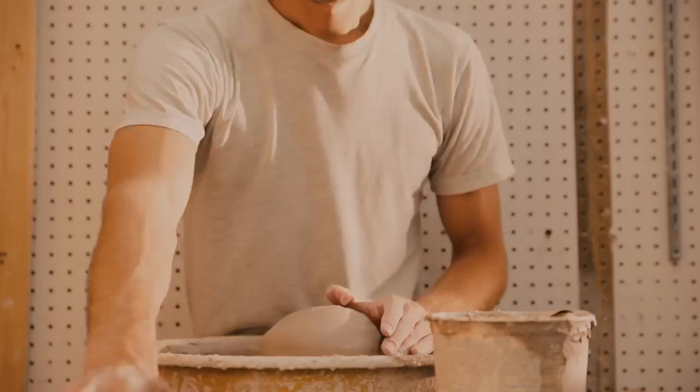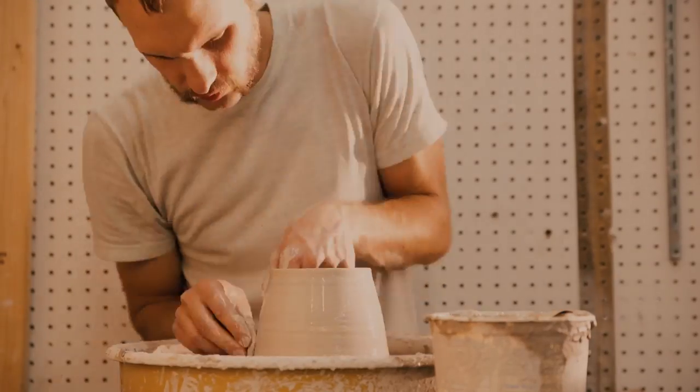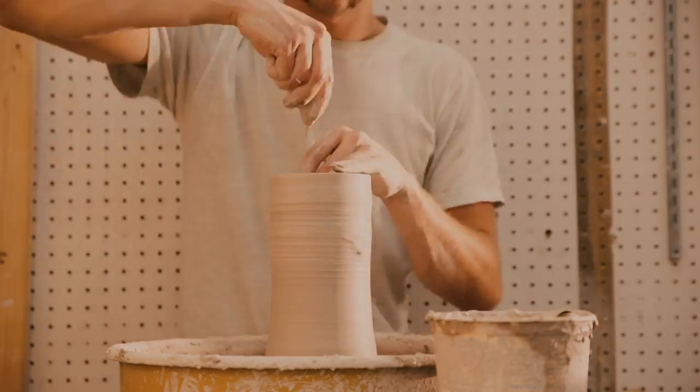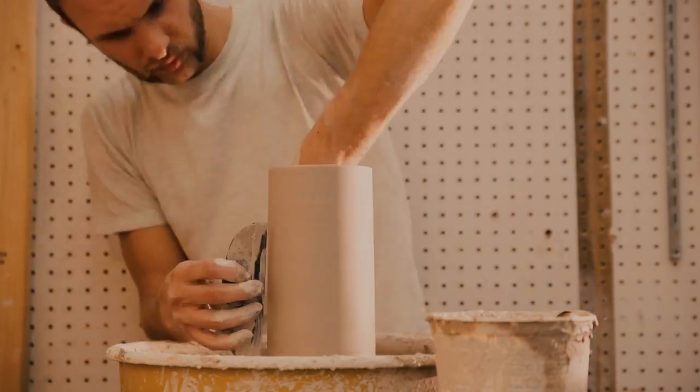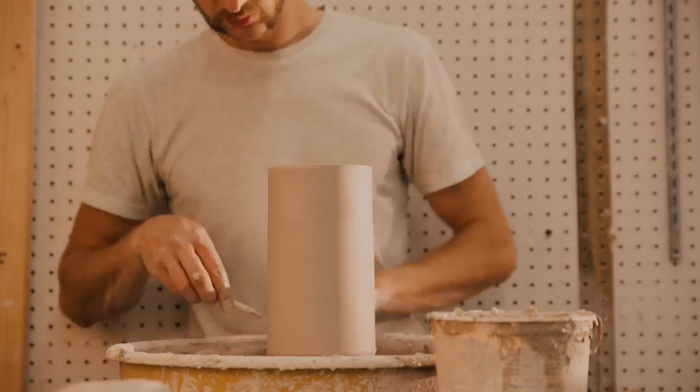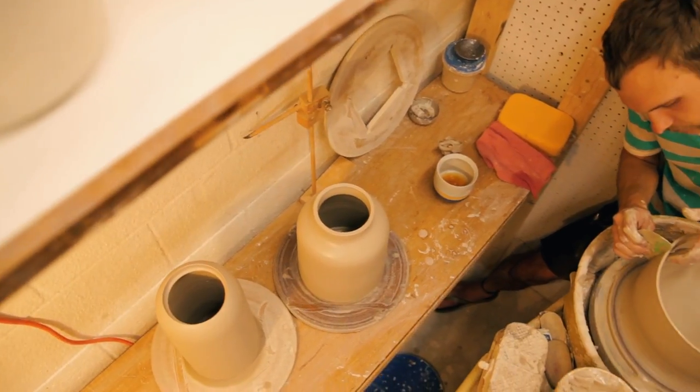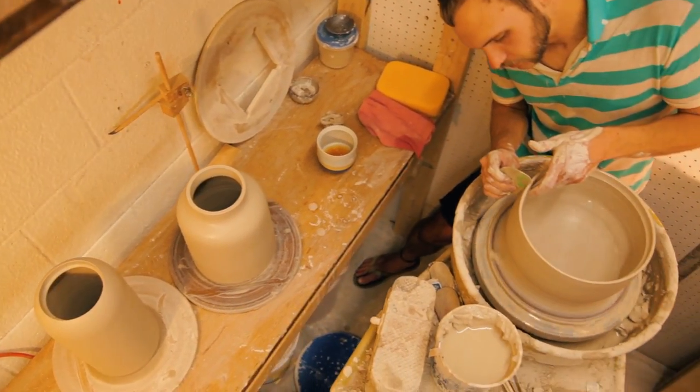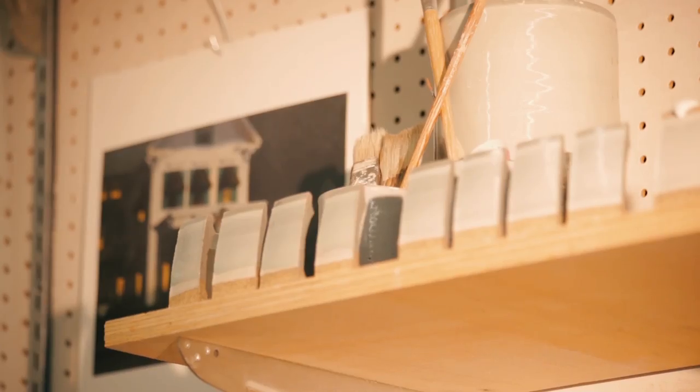The earliest method for making bowls and functional clay is hand-building, using only hands and clay. Around 5000 BC, the potter's wheel was invented, allowing the potter to throw even, symmetrical shapes in much less time with far less effort.